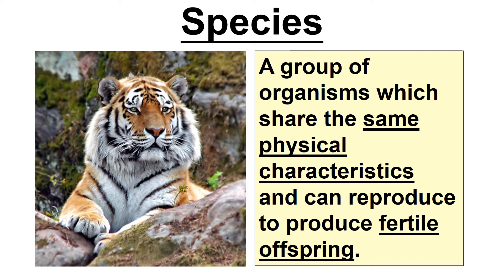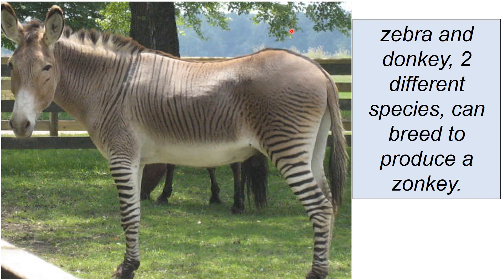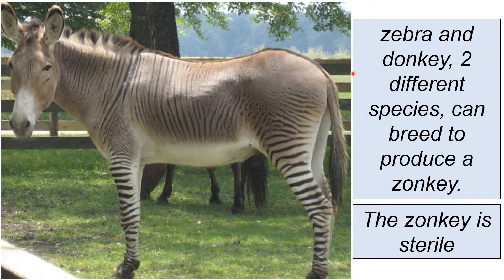However, you can produce hybrids. For example, that is a zebra and a donkey — two different species — but you can breed them together to produce a zonkey. However, because the zebra and the donkey are two different species, the zonkey is sterile. So the zonkey would not be able to produce offspring. I think you can also have a 'deborah', depending on which is the father and which is the mother.